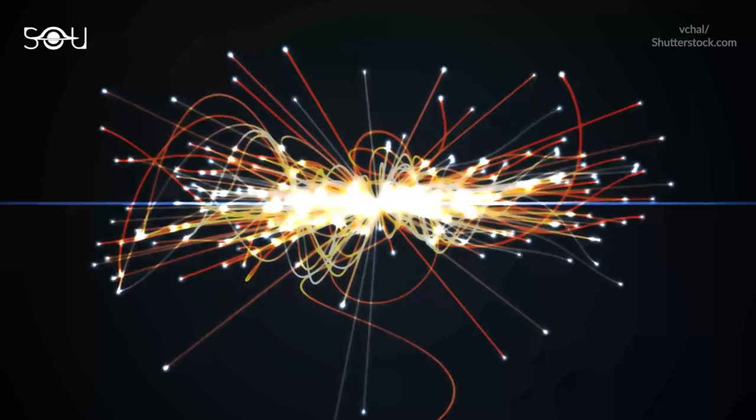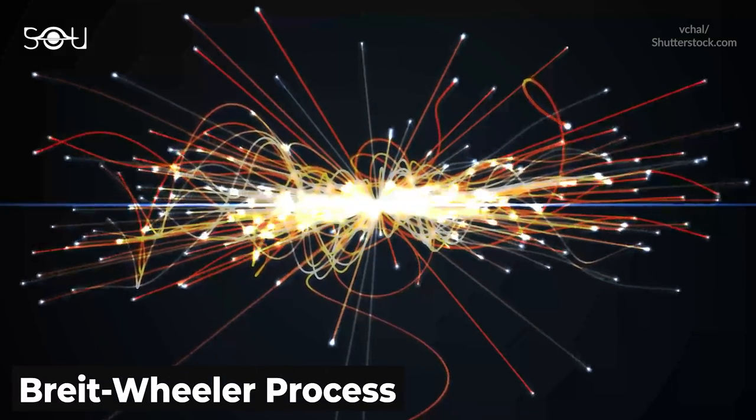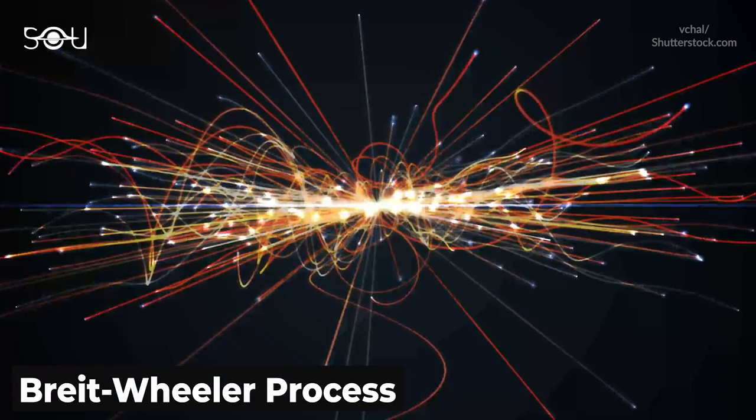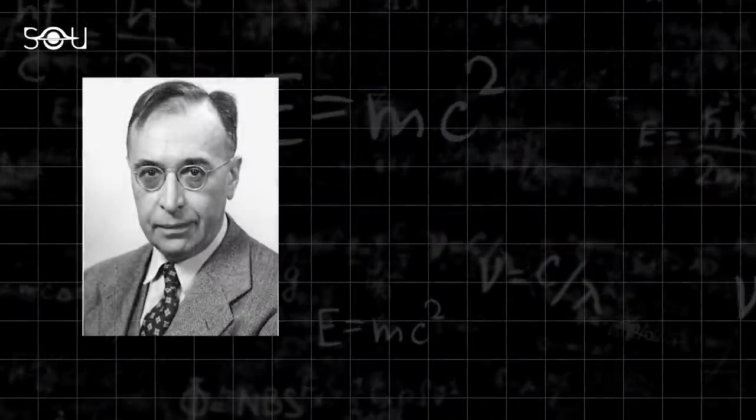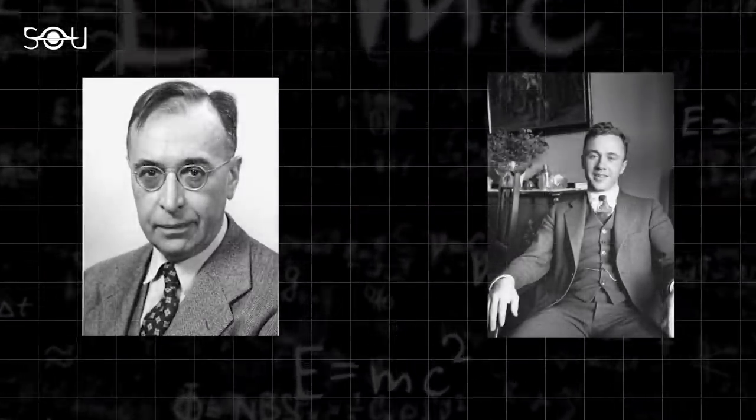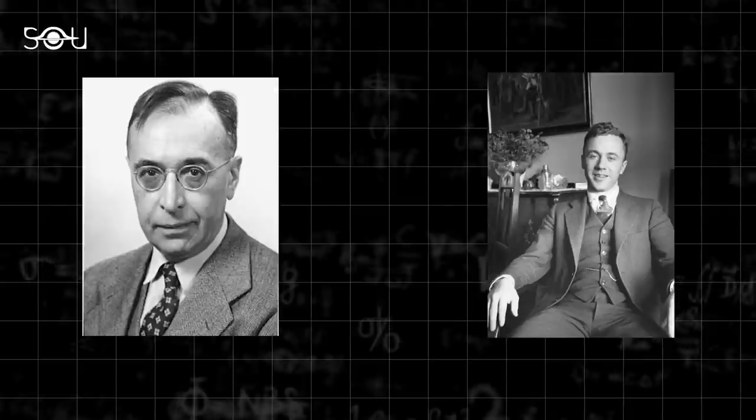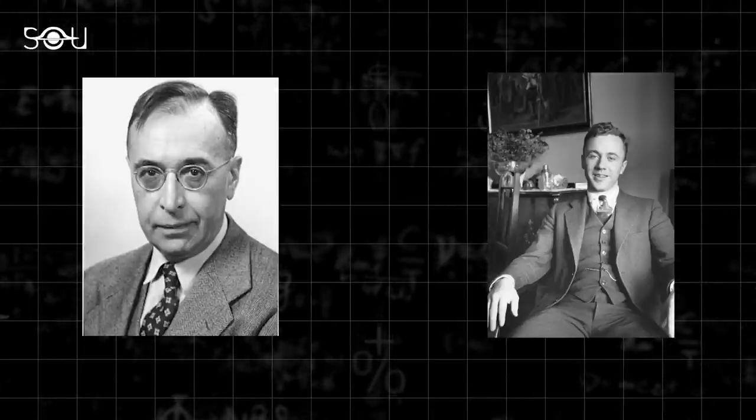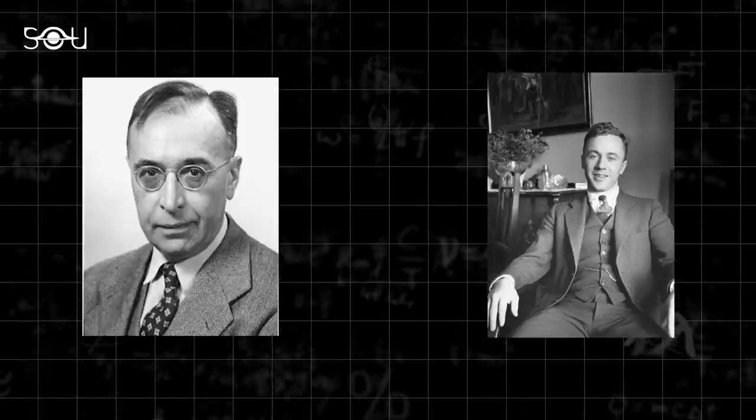Precisely, this process is known as the Breit-Wheeler process. This process was first described by American physicists Gregory Breit and John Wheeler in 1934, but it has been one of the most difficult ones to demonstrate experimentally. The reason is simple.